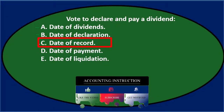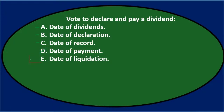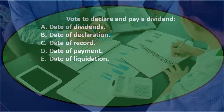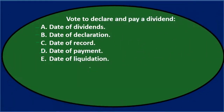C says date of record — that could sound reasonable too, I'll keep that for now. D says date of payment. The declaration date is probably different than the payment date, so I'm going to say that's probably not it. E says date of liquidation — that looks like an answer they didn't know what else to put there, because liquidation would mean we closed the whole company. So E looks way out there, we can cross that one out.